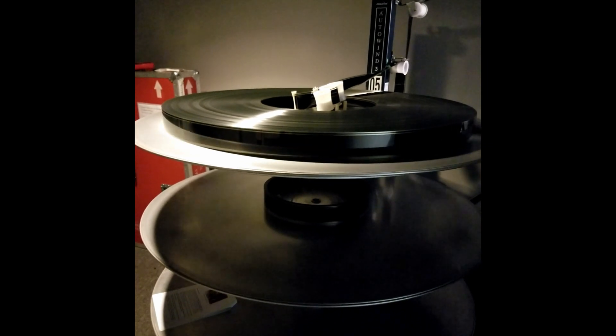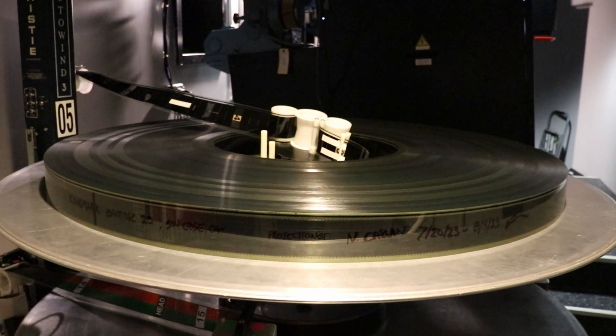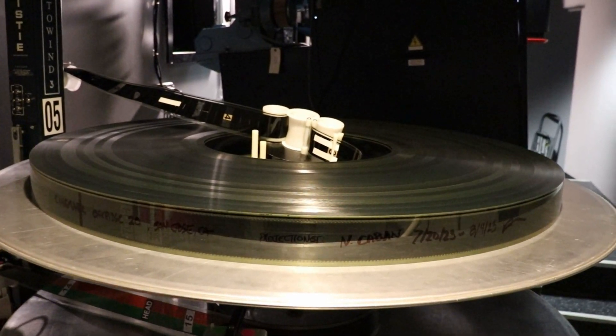First, the film handling system. This is what's called a film platter. It holds the entire movie spliced together all in one giant roll.